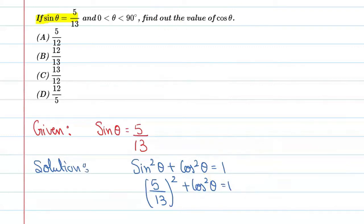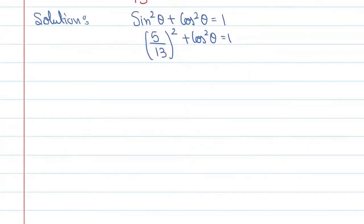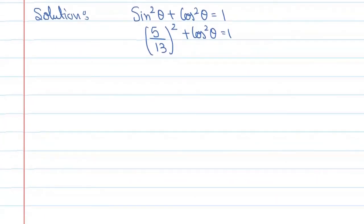We have to take the right hand side term to the left. When we take it to the other side, the sign will change. So you can write cos²θ = 1 - 5/13.